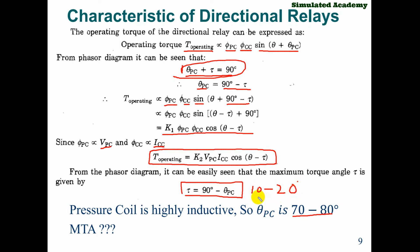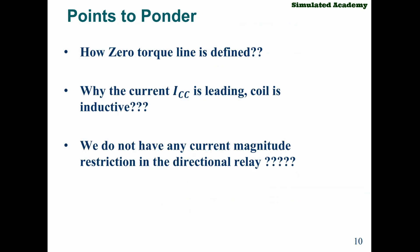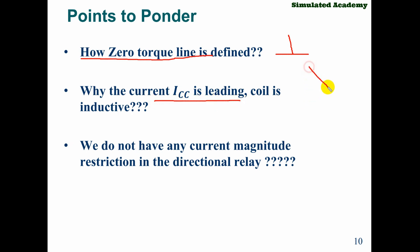We will solve some examples to make the concepts clearer. The zero torque line is defined as the line along which torque is zero, and the MTA line is perpendicular to it. The current leads in an inductive coil. We use line-to-line voltage as the polarizing quantity. There is no restriction on direction — for example, a forward fault or forward current sets the relay, and the load current direction also matters.